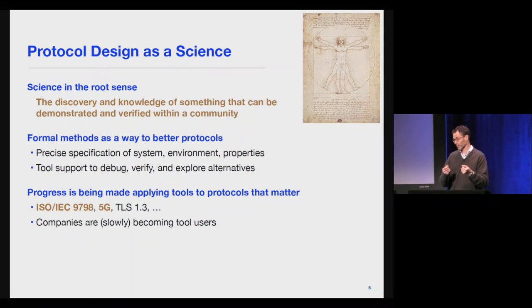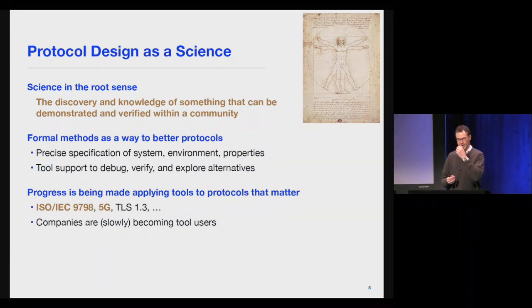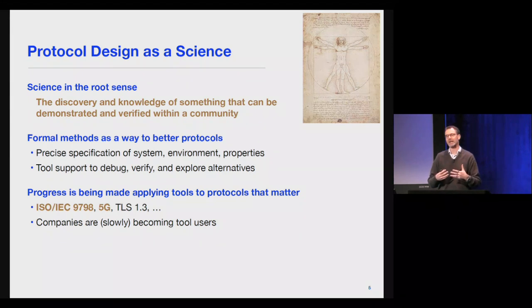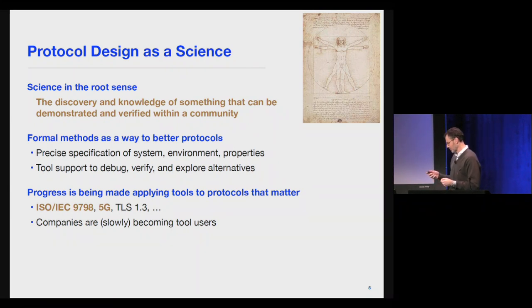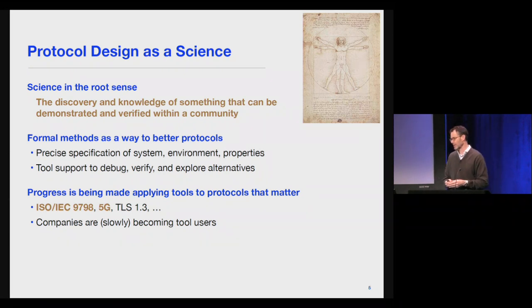Formal methods is one way to do this. It's a way to build better protocols where we have very precise specifications of the system — the protocol, the environment, i.e. the adversary it interacts with, and also the properties. If we do this well and have supporting tools, we can debug, verify, and explore alternatives. There has been a lot of progress over the last 20-plus years in formal methods for security protocols, and tools have advanced to the point where we can apply them with reasonable effort to protocols that really matter — including entity authentication, 5G, and TLS 1.3.